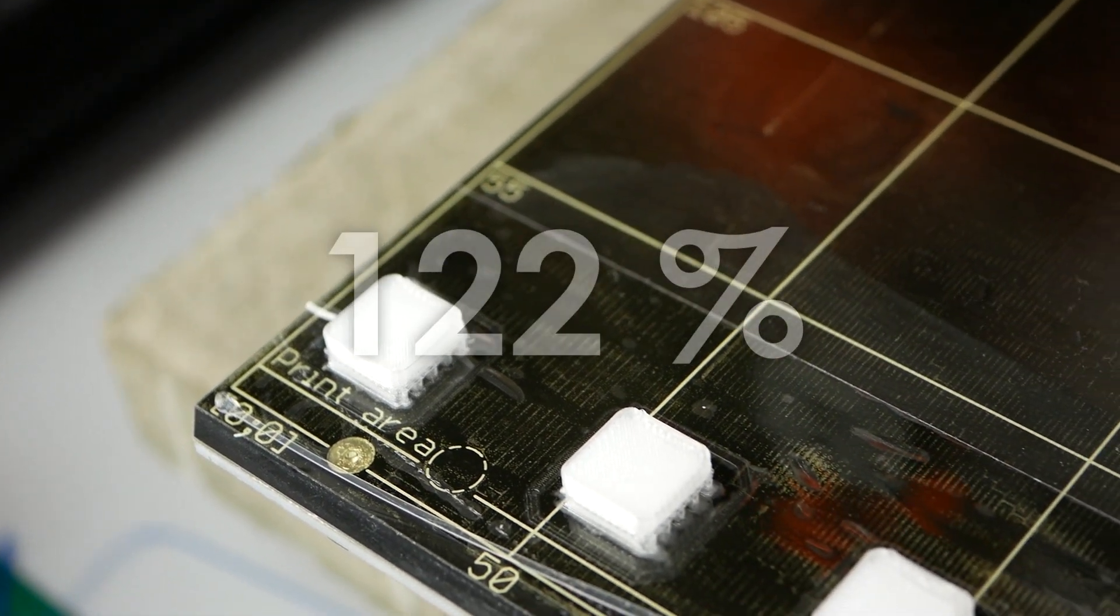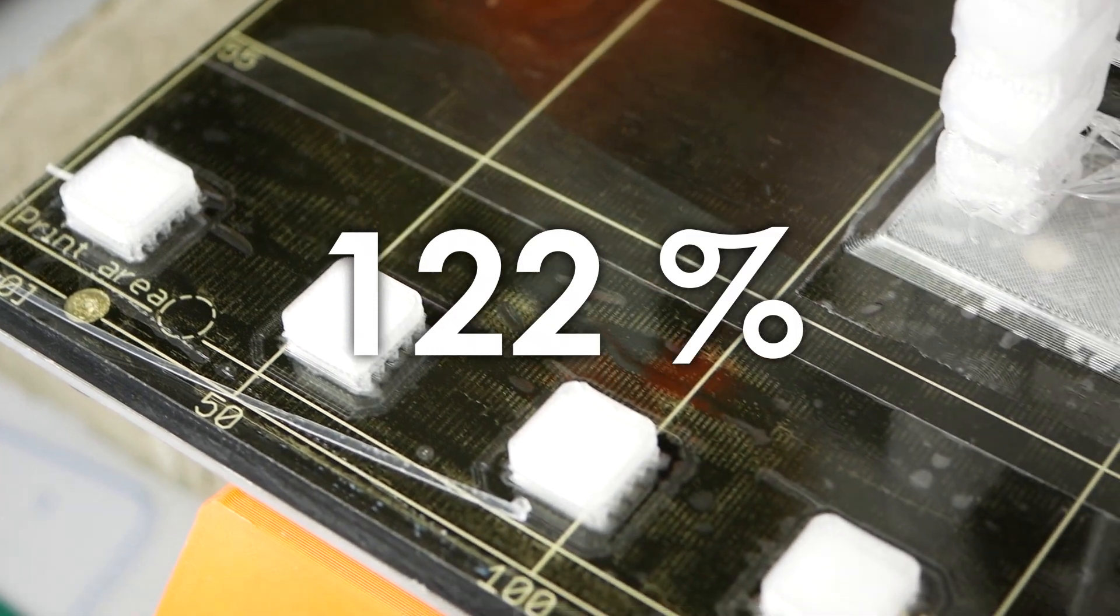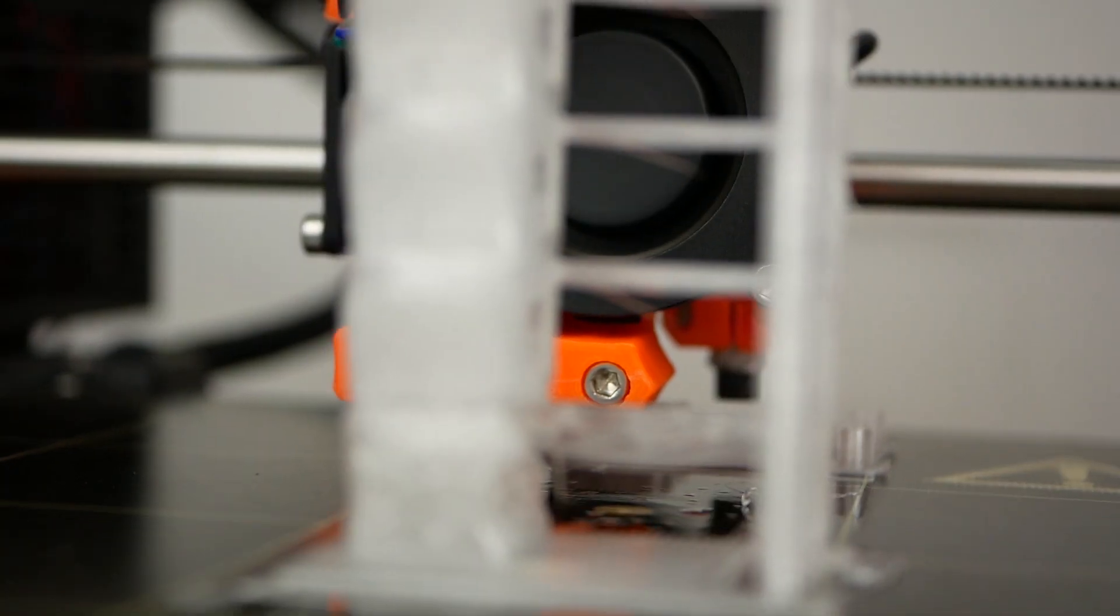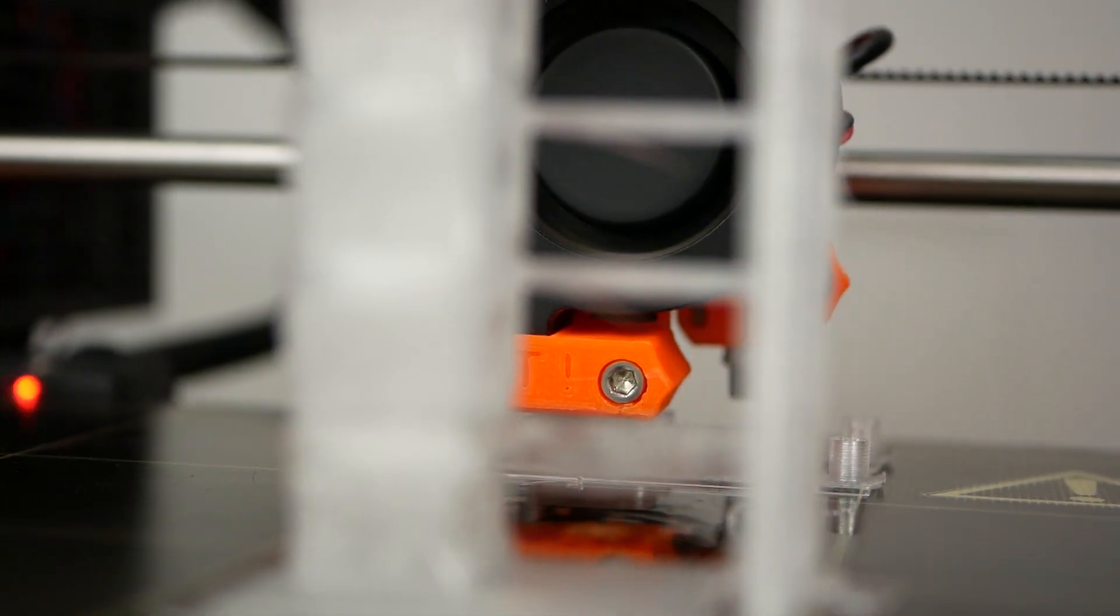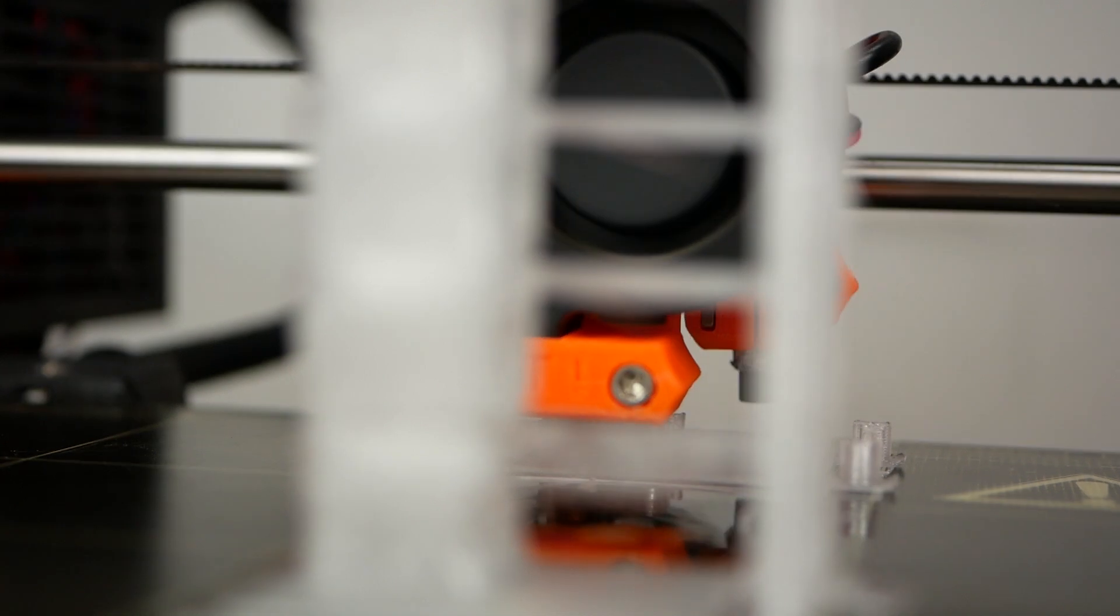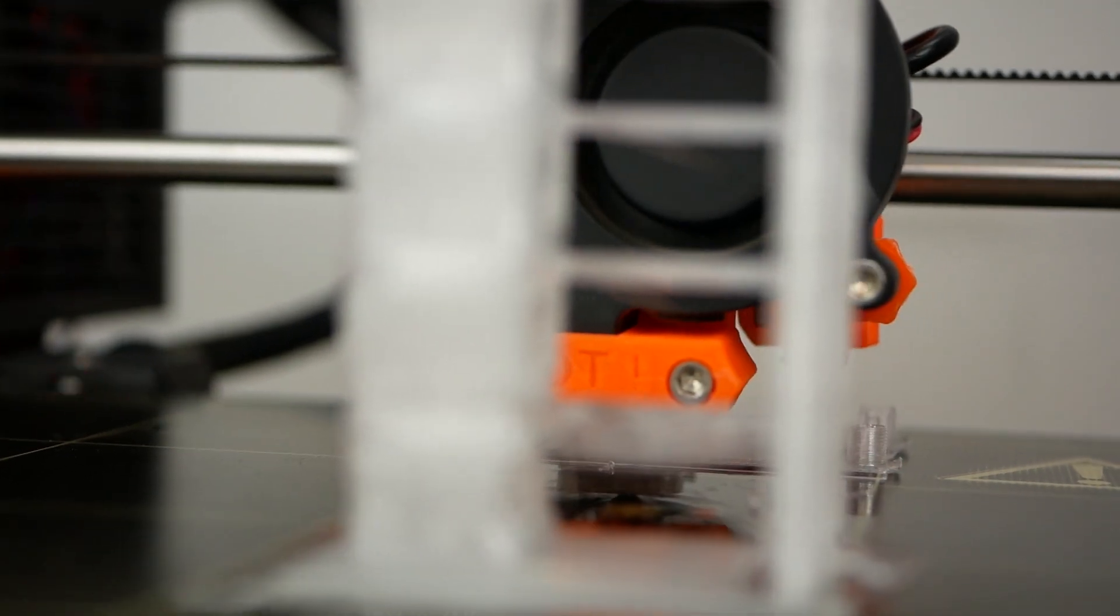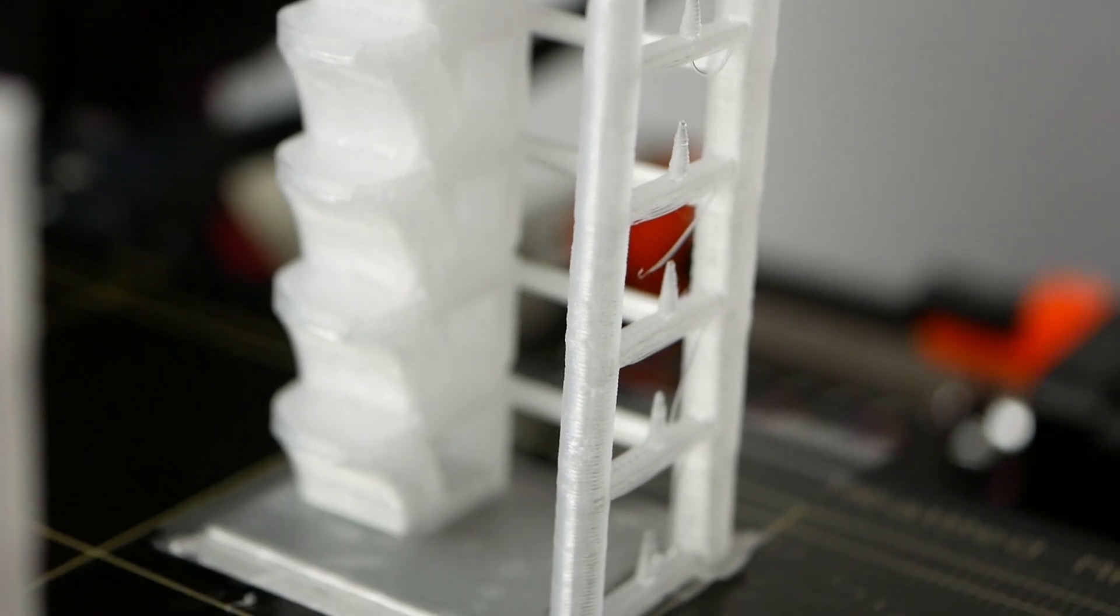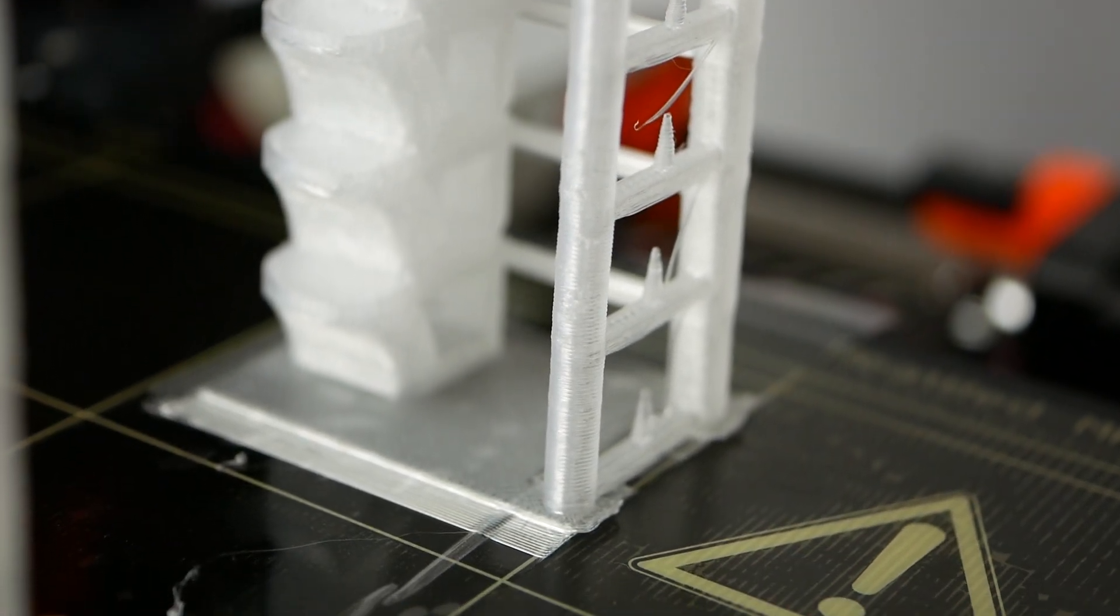Due to its soft nature, I had to crank the extrusion factor all the way up to 122%. I printed 3D Maker Noob's test tower with nozzle temperatures from 210°C to 250°C, where the only real difference was that 210°C left a more matte surface finish, so I went with the middle range 230°C for the rest of the prints.